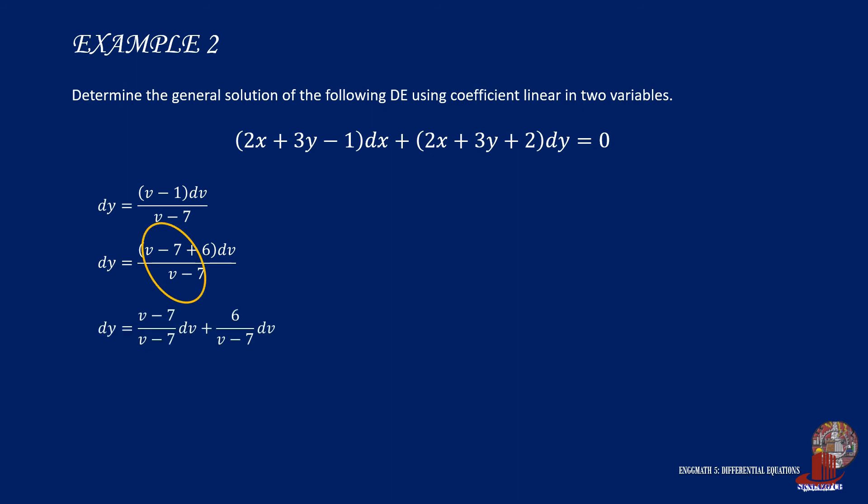Note that v minus 7 plus 6 is still the same as v minus 1, but then a complete division can be observed. So if we separate the numerators, we can have the following equation where the first term can cancel similar coefficients and the second term is actually the remainder.